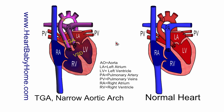Narrow or hypoplastic aortic arch. The arch is the point above the pulmonary artery where it looks like an upside-down U. It's underdeveloped and smaller than that of a normal heart, which makes it harder for blood to flow out and get to the body.